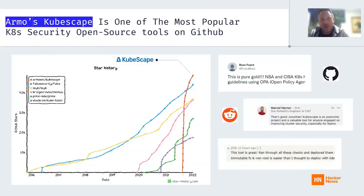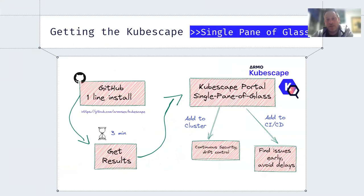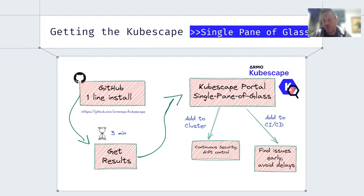So what is KubeScape? KubeScape is really becoming one of the most popular Kubernetes security open source tools on GitHub, getting great reviews on GitHub, Reddit, and Hacker News, gaining a lot of stars. The idea is very simple: get very quickly into a deep and good understanding of what is going on in your cluster. You go to GitHub, use a one-line install script, get your results, go to the KubeScape portal — a SaaS version that gives you a single pane of glass across all your clusters. You can also add KubeScape to your CI/CD, or add it to your cluster for continuous security, drift control, and continuously monitor your posture.